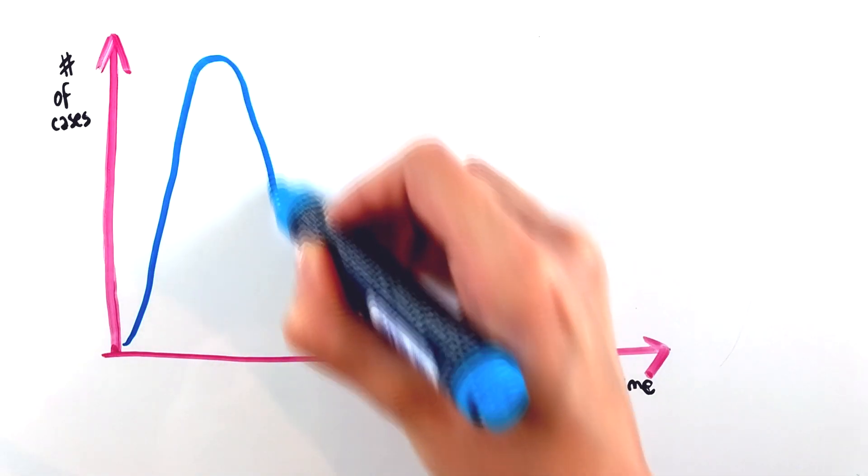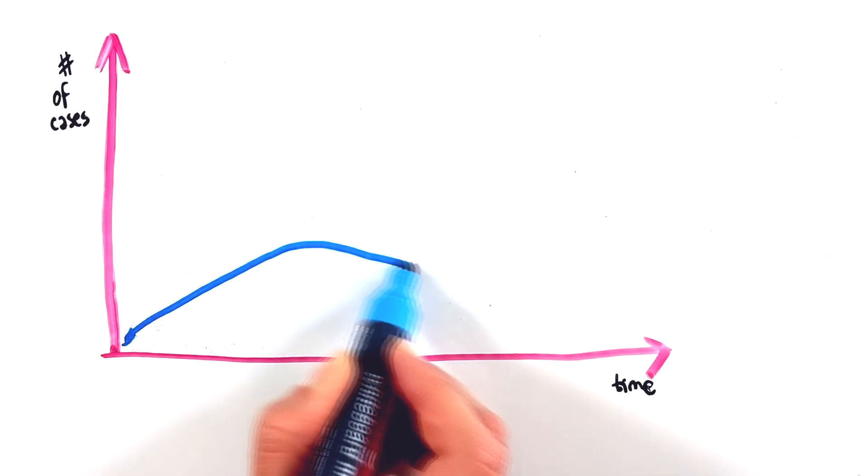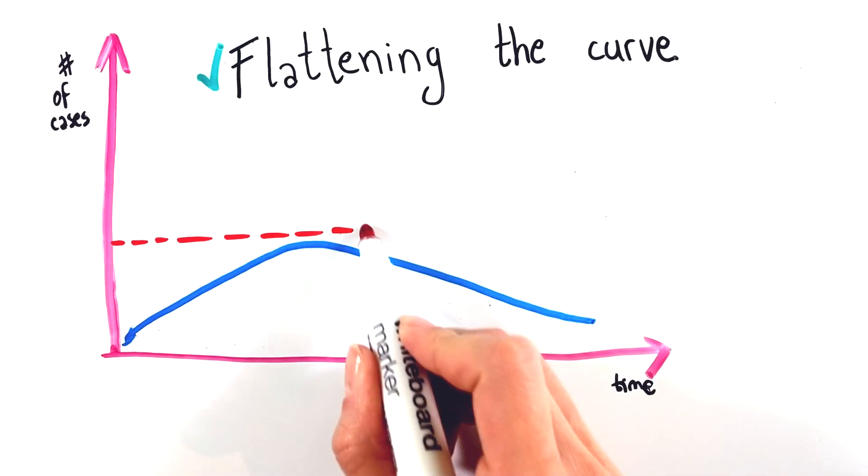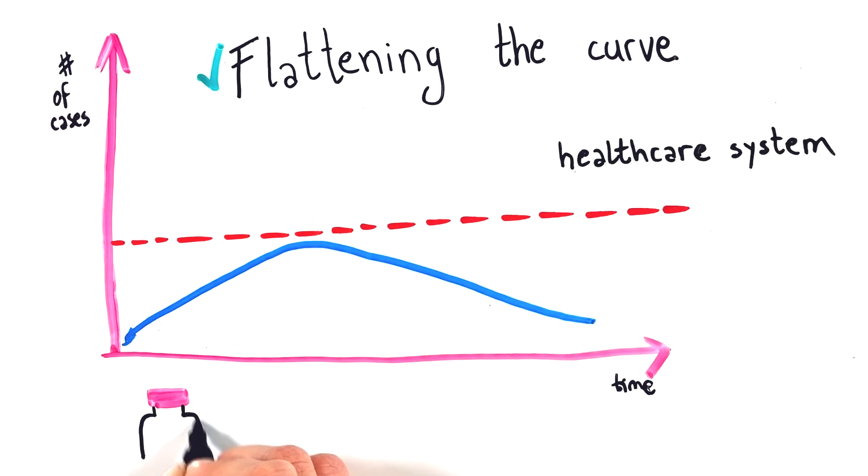A key part of controlling a viral outbreak is to decrease the curve trend, known as flattening the curve, which aids in slowing down the virus spread and helps prevent health services overload. It also buys time for better treatment and for a vaccine to be developed.